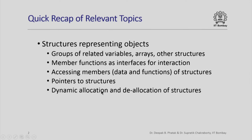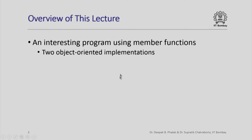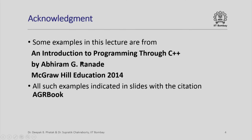We have also studied dynamic allocation and deallocation of structures. In this lecture we are going to put all of this knowledge together to write an interesting program using member functions. We are going to see two different object-oriented implementations of the same program and understand the differences between them. Some examples in this lecture are from the book 'An Introduction to Programming through C++' by Abhiram G. Ranade, published by McGraw Hill Education in 2014, and such examples will be indicated with the citation AGR book.